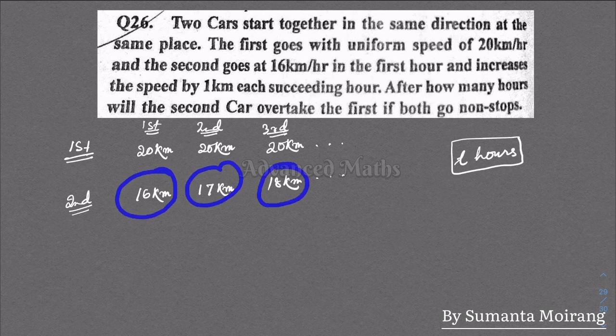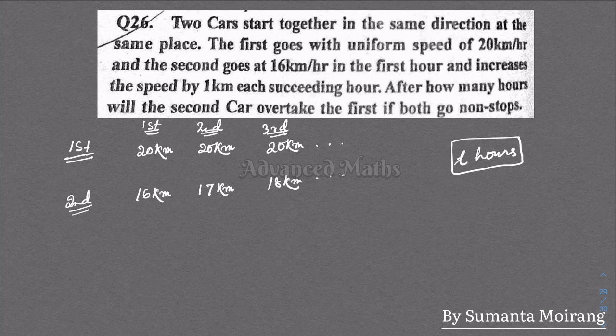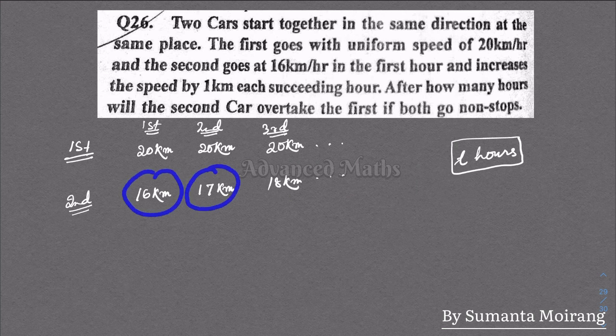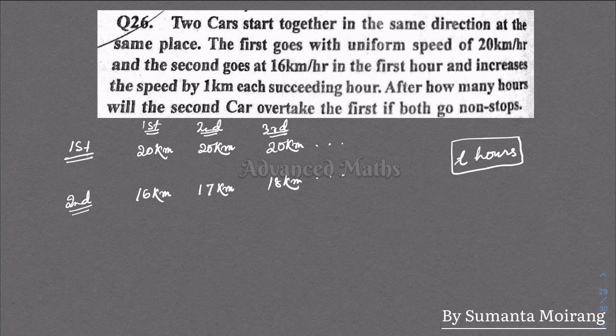For the second car, the distances follow the pattern 16, 17, 18 kilometers for each hour. We need a formula for this total distance.